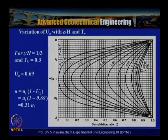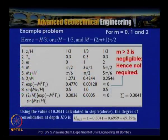This example demonstrates how isochrone charts are used to determine consolidation at any depth. For m > 3 the contribution to the series is negligible, so we can stop at m = 2. This approach gives the degree of consolidation at a particular depth z = h/3 for a given time factor Tv.